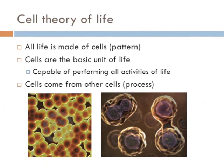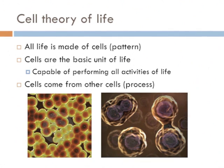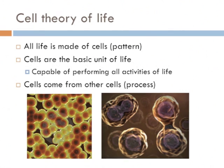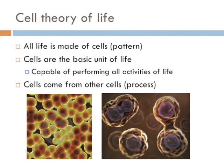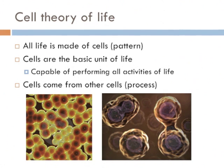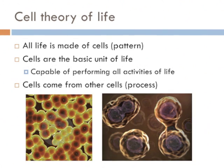The cell theory of life has three main components. First, all life is made of cells — in order for something to be alive, it has to be incorporated within cells. By this notion, things like viruses such as HIV and herpes are not considered to be alive, even though they have many characteristics of life including reproduction, adaptation to their environment, and stimulus response. Second, cells are the basic unit of life, capable of performing all the activities of life. And third, all cells have come from other cells.